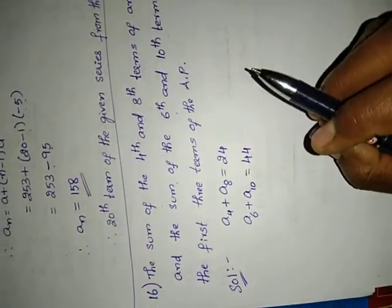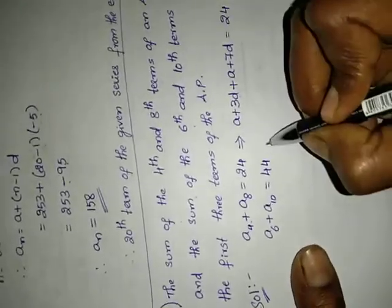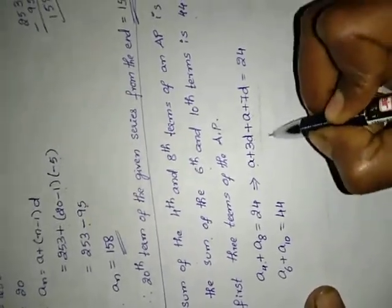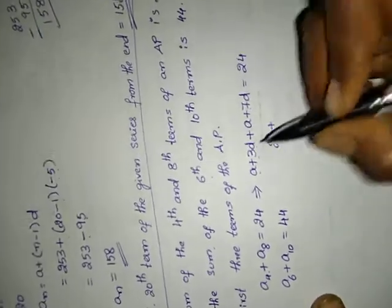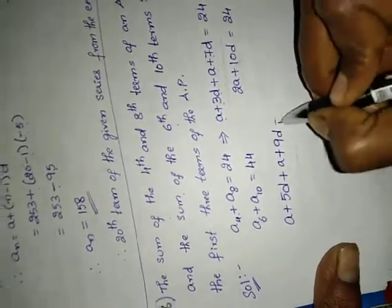We have to find the first three terms of the series. A4 means A plus 3D, and A8 means A plus 7D, so their sum gives 2A plus 10D equals 24 — let this be equation 1. A6 means A plus 5D, and A10 means A plus 9D, so their sum gives 2A plus 14D equals 44.